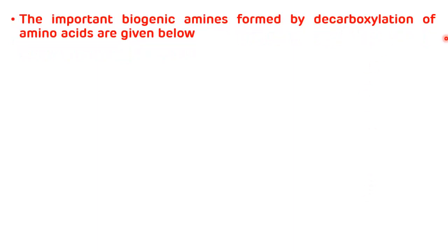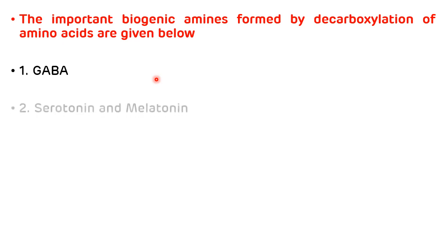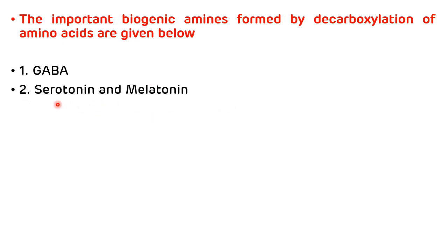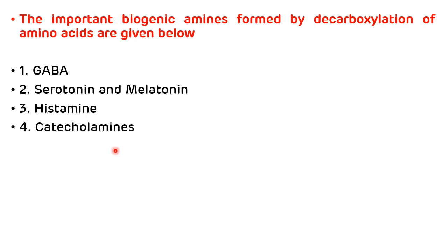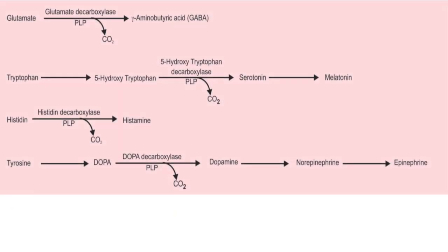The important biogenic amines formed by decarboxylation of amino acids are: first, gamma-aminobutyric acid (GABA), which is formed from glutamate. Second, serotonin and melatonin — serotonin is a neurotransmitter that regulates cerebral activity, and melatonin is a hormone that regulates the sleep cycle and circadian rhythm. Third is histamine, formed from histidine, which mediates allergic reactions and acts as a vasodilator. Fourth are the catecholamines: dopamine, norepinephrine, and epinephrine.